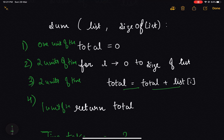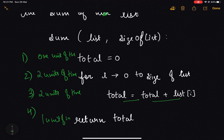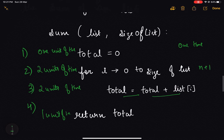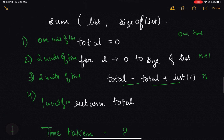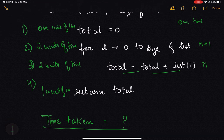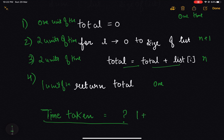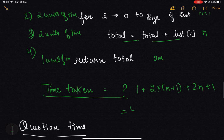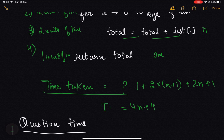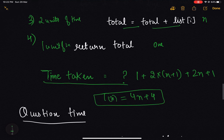Now let's see how many times each instruction executes. Instruction one executes once. Instruction two executes n+1 times, where n is the size of the list. Instruction three executes n times. Instruction four executes once. So the overall execution time is 1 + 2(n+1) + 2n + 1, which simplifies to 4n + 4 — a linear function of the input.